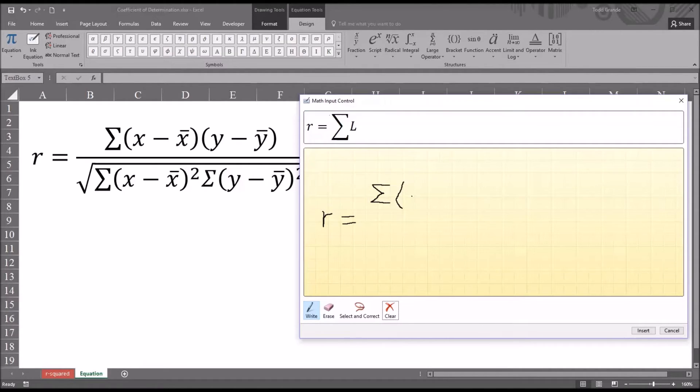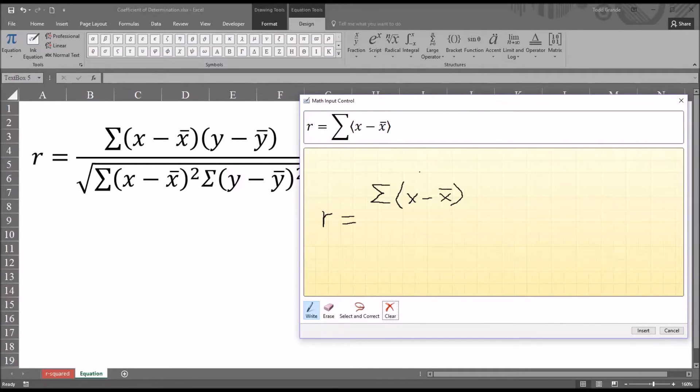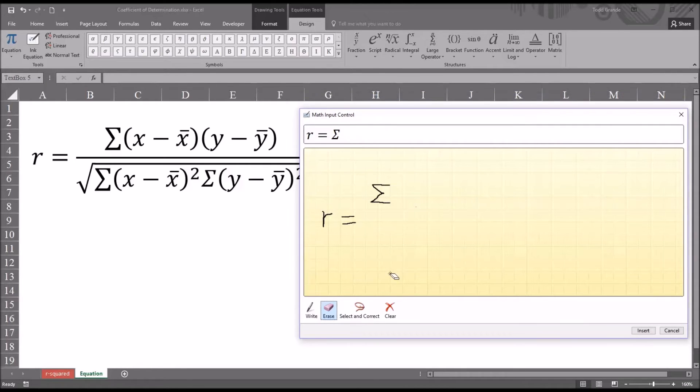And open parenthesis. X minus X bar and then close parenthesis. Now you can see that it's not using parenthesis here in this case. So I have a few choices. I can try select and correct or erase. And I didn't really get this parenthesis in a manner that looks like parenthesis. That's why it doesn't show up that way. So let me try again. Try to make it more rounded.